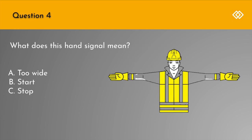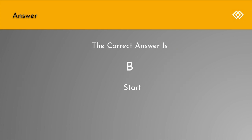Question 4. What does this hand signal mean? A. Too wide. B. Start. Or C. Stop. The correct answer is B: Start.